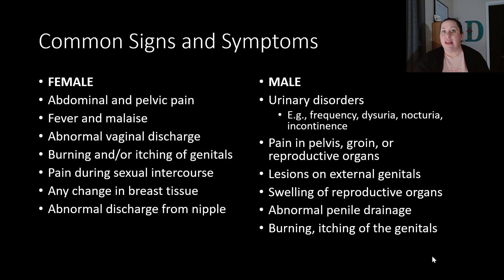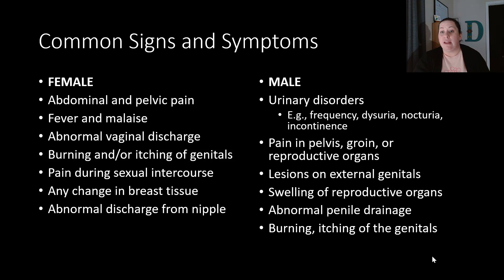For males, urinary disorders are common because the urinary system is linked to the reproductive system. These include urinary frequency, dysuria (pain with urination), nocturia (frequent nighttime urination), and incontinence. Males can also have pain in the pelvic region, groin, and reproductive organs, lesions on external genitalia, swelling of the reproductive organs, abnormal penile discharge, and burning or itching of the genitals.